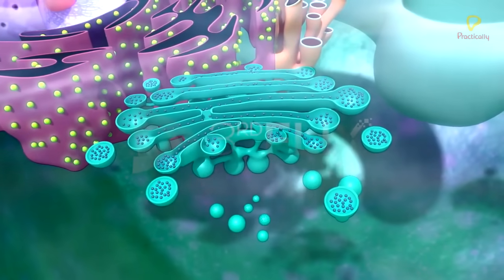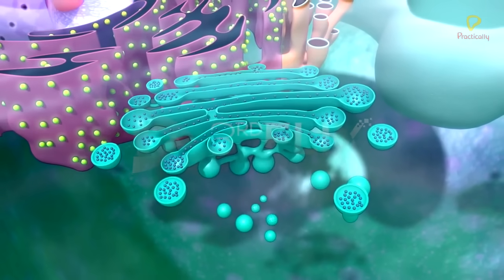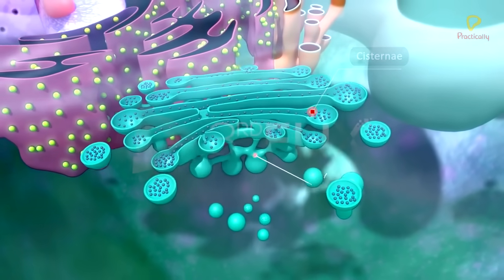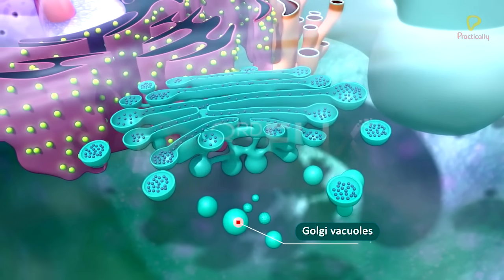Structure: Golgi complex has four components. They are cisternae, tubules, vesicles, and Golgi vacuoles.